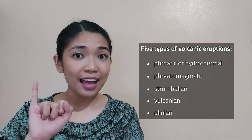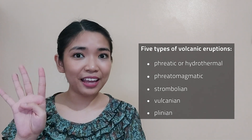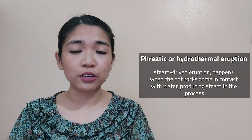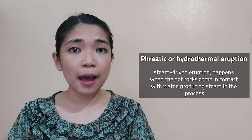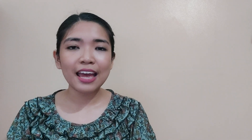The five types are: phreatic or hydrothermal, phreatomagmatic, Strombolian, Vulcanian, and Plinian. A phreatic or hydrothermal eruption is a steam-driven eruption. This happens when hot rocks come in contact with water, producing steam in the process. It is a short-lived eruption characterized by ash columns, but may also be an onset for a larger eruption. Taal Volcano demonstrated a phreatic eruption in January 2020, as did Mayon Volcano when it erupted in July 2018. Both eruptions sent steam and ash several hundred meters into the sky.